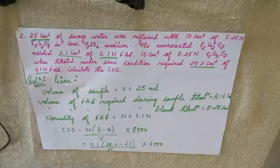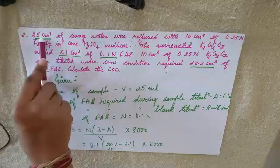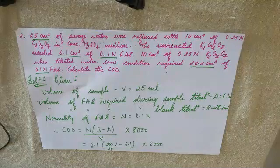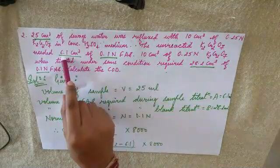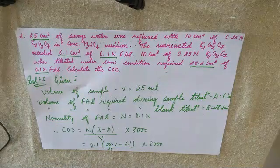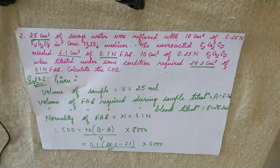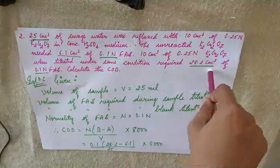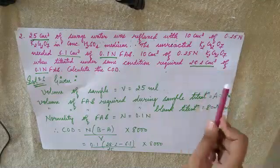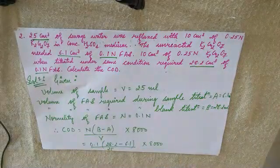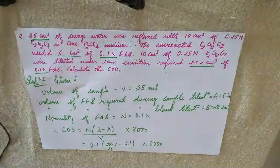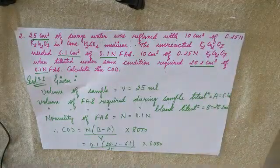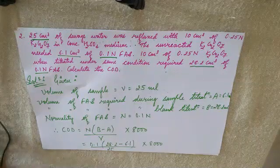While calculating, do not get confused with the potassium dichromate volume or its normality. You need to be clear about what you want. The volume of sewage water sample is 25 cm³. The volume of FAS required for sample titration, A, is 6.1 ml. The volume of FAS consumed during blank titration, B, is 28.2 cm³. And normality of FAS is 0.1 normals. Do not get confused when volume and normality of K₂Cr₂O₇ are both given — just remember the procedure.